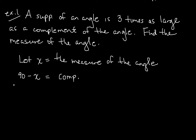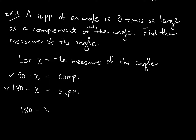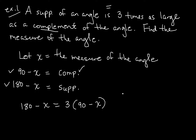We're going to need both in this problem. Whenever we see 'supplement' we use 180 minus X, and whenever we see 'complement' we use 90 minus X. Reading along with the sentence: 'A supplement of the angle' — that's 180 minus X — 'is three times as large as the complement' — so we use 90 minus X. The equation is: 180 minus X equals 3 times (90 minus X). Once you get the equation, you just follow along and distribute through.